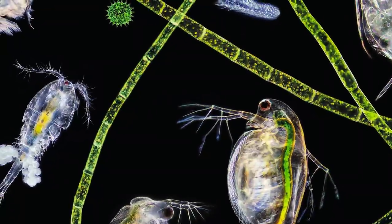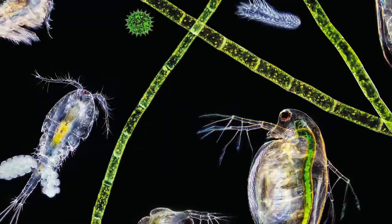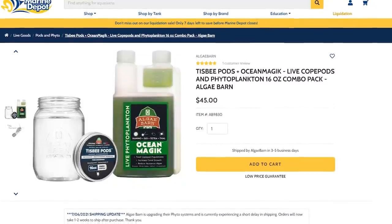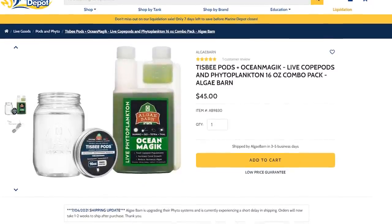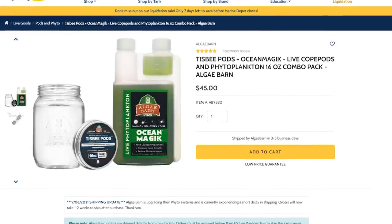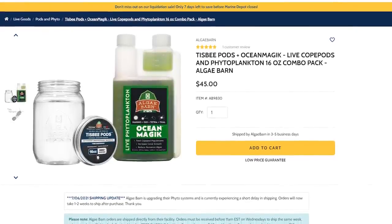Live cultures of zooplankton, like reef pods, make it easy to introduce nutritious copepods to your tank. Algae Barn's Tisbe Pods and Ocean Magik's Phytoplankton Combo Pack come with live microalgae and Tisbe copepods so you can spot feed or raise your own copepod culture.